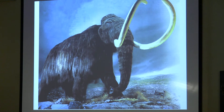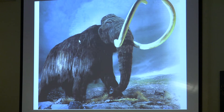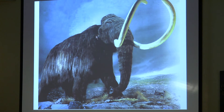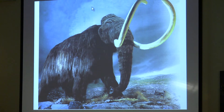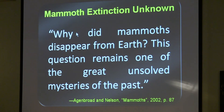The woolly mammoth had tusks that curved inward, hair up to three feet long in three layers, a hump on its head and back, a back that sloped down more than today's elephants, and small ears — all adaptations for cold. There were millions of them in Siberia, Alaska, and the Yukon, areas that were never glaciated. They also lived in the United States, as did the Colombian mammoth — similar but with less hair and taller, about 13 feet at the shoulders compared to the woolly mammoth's 10–11 feet. The Colombian mammoth was the largest elephant that ever existed. Mammoth extinction has been a mystery for 200 years — described by top investigator Larry Agenbrod and Lisa Nelson as 'one of the great unsolved mysteries of the past.'